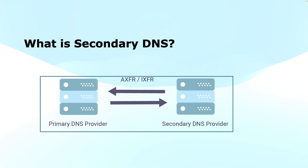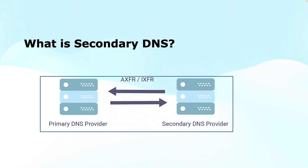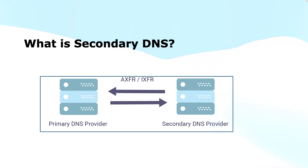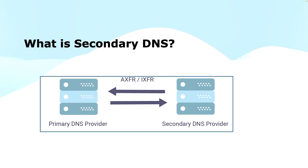Secondary DNS, also known as a slave DNS server, is a copy of the primary DNS server — it holds a replica of the zone data. The primary DNS server, known as the master server, is where DNS records are initially created and maintained. The secondary DNS server periodically pulls records from the primary server to stay up to date. This zone transfer from primary to secondary is done through a full zone transfer (AXFR) or incremental zone transfer (IXFR).